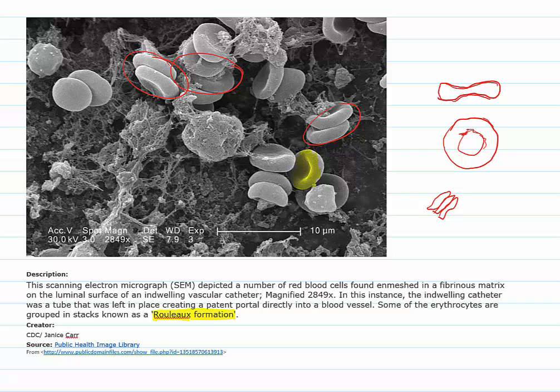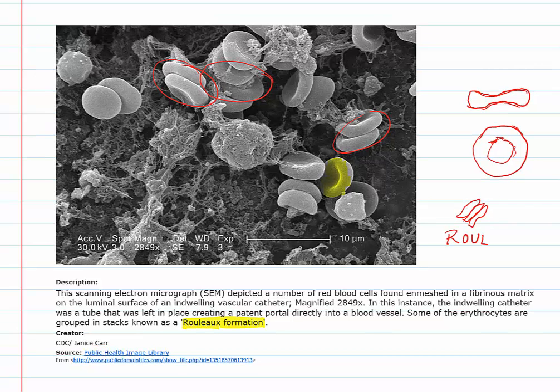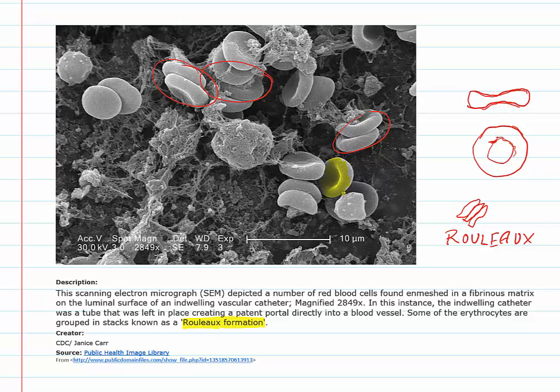So the Rouleau formation is what allows the red blood cell to provide the shear thinning property that we will discuss in a bit.